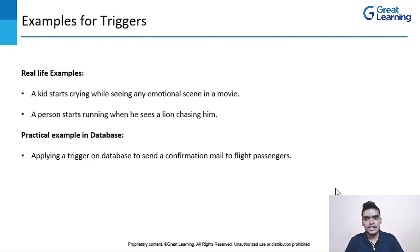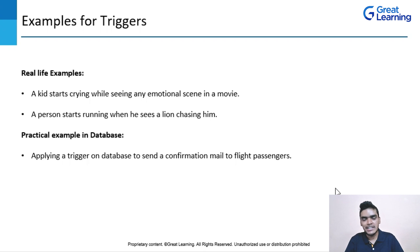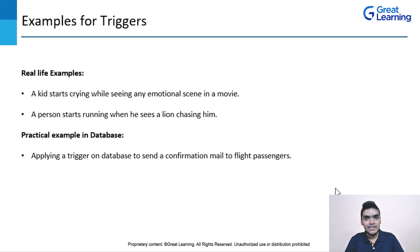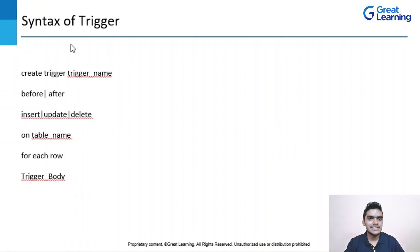Let's see a practical example. Suppose a passenger has booked a ticket and needs a confirmation mail. If a flight attendant officer sends each and every passenger a confirmation email manually, it will take a lot of time because there will be many passengers on one flight. This is where triggers come into the picture. If we apply a trigger on the database, whenever someone books a ticket and submits their credentials, the trigger will be automatically executed and will send the confirmation message to every passenger. Without a trigger, efficiency decreases, human error increases, and more time is consumed. This is the advantage of using triggers.